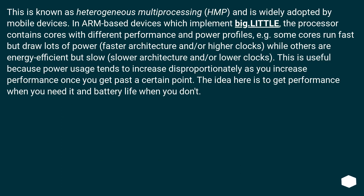This is known as heterogeneous multiprocessing (HMP), and is widely adopted by mobile devices. In ARM-based devices which implement big.LITTLE, the processor contains cores with different performance and power profiles — for example some cores run fast but draw lots of power (faster architecture and/or higher clocks), while others are energy efficient but slow (slower architecture and/or lower clocks). This is useful because power usage tends to increase disproportionately as you increase performance once you get past a certain point. The idea is to get performance when you need it and battery life when you don't.